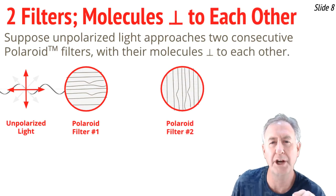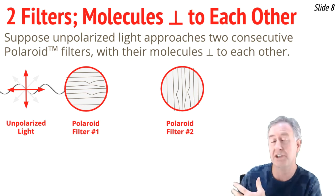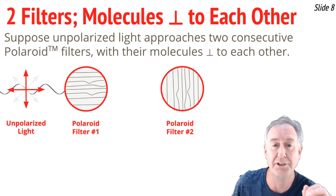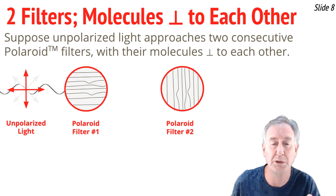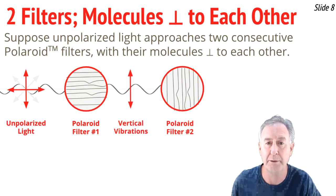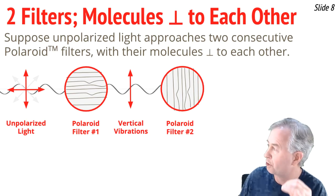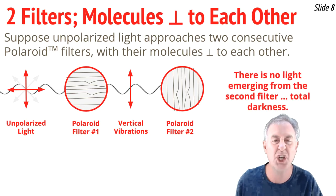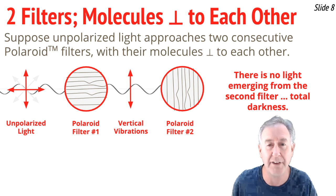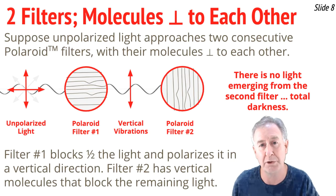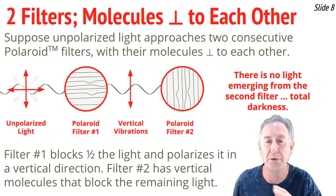Now let's consider unpolarized light approaching two filters whose molecules are aligned perpendicular to one another — the first filter has horizontal molecules, the second has vertical molecules. What happens as the light goes through the first filter is that half of the vibrations get blocked. Because the molecules are horizontal, horizontal vibrations get blocked, and vertical vibrations get through. But as those vertical vibrations approach the second filter with its vertical molecules, those vertical vibrations get blocked. No light gets through — absolute darkness. Filter one blocks half the light and polarizes it vertically, and filter two blocks the remainder.